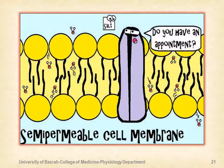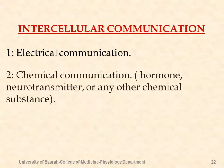This picture gives an overview of the cell membrane content and distribution. For intercellular communications, there are two types: electrical communications, also called gap junctions, and chemical communications involving hormones, neurotransmitters, or other chemical substances.